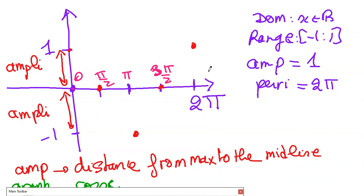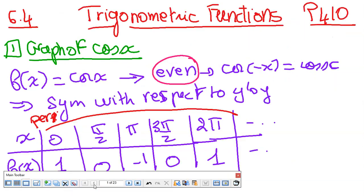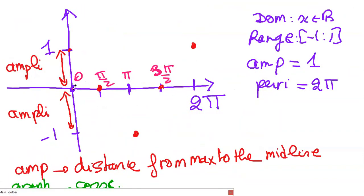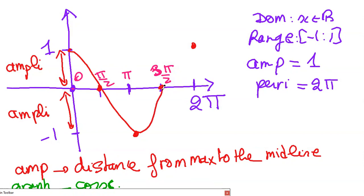Looking at cosine, the maximum value is 1 and the minimum value is -1. The distance between the midline and the maximum point is called the amplitude, so the amplitude is 1. The range is y between -1 and 1. Now I will join the particular points. This function represents the cosine function. To complete the graph, do the symmetry with respect to y and continue — you get a sinusoidal function.